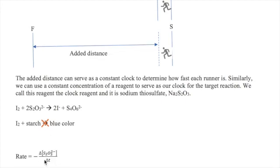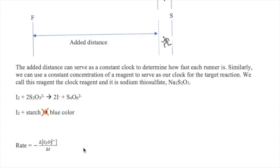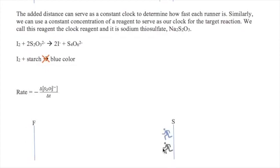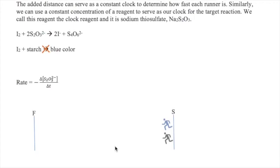So the rate now is defined as the change in thiosulfate concentration over a change in time. Now let's say you're trying to compare the speed of two very fast runners. Again, we're going to add that distance for both runners. But more importantly, you're going to have to add the same distance. In other words, the added distance must be equal for both runners. Otherwise, a slower runner may appear to be faster if it only has to run a shorter distance.